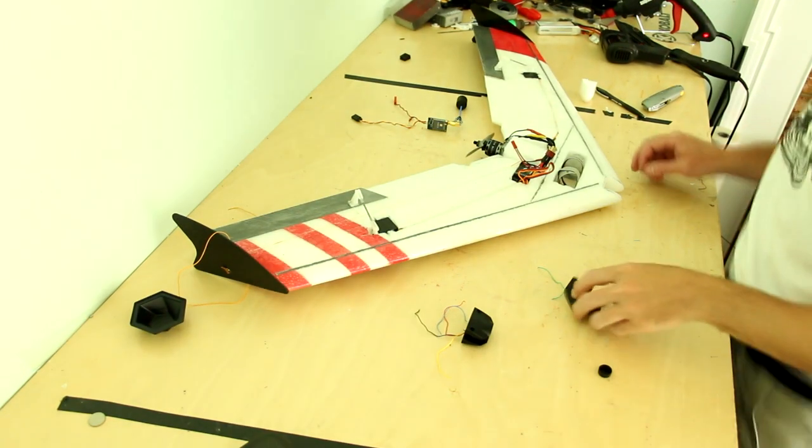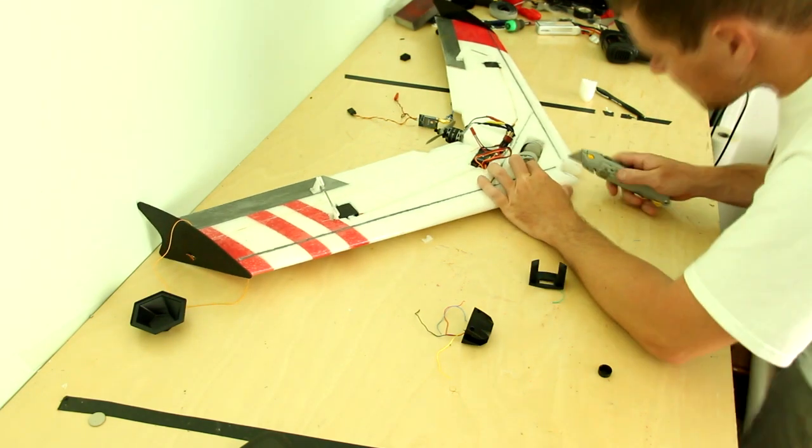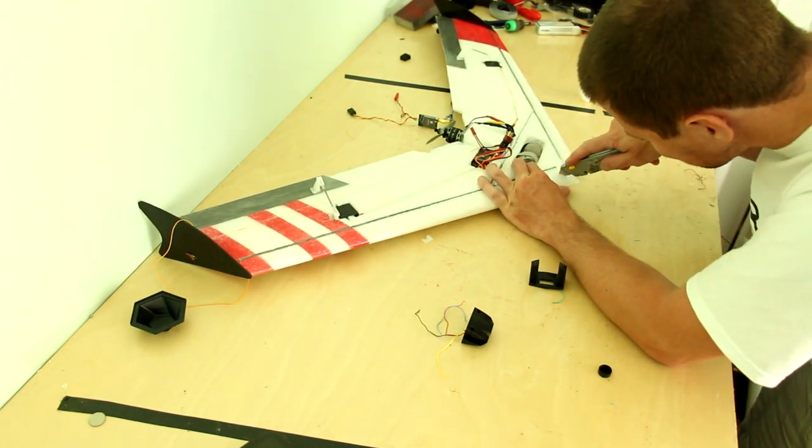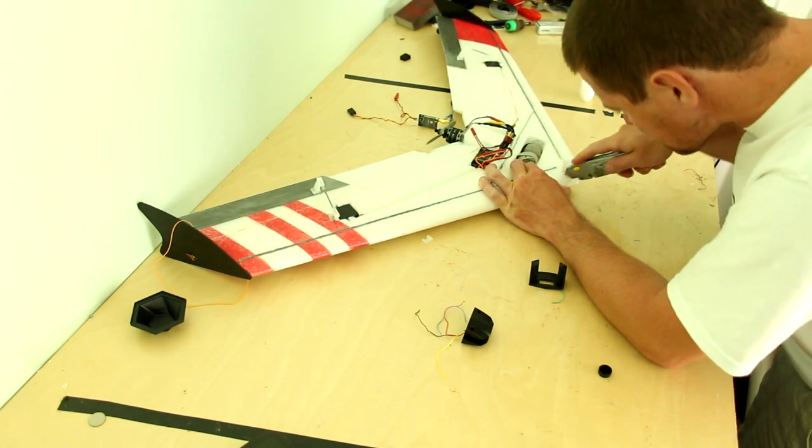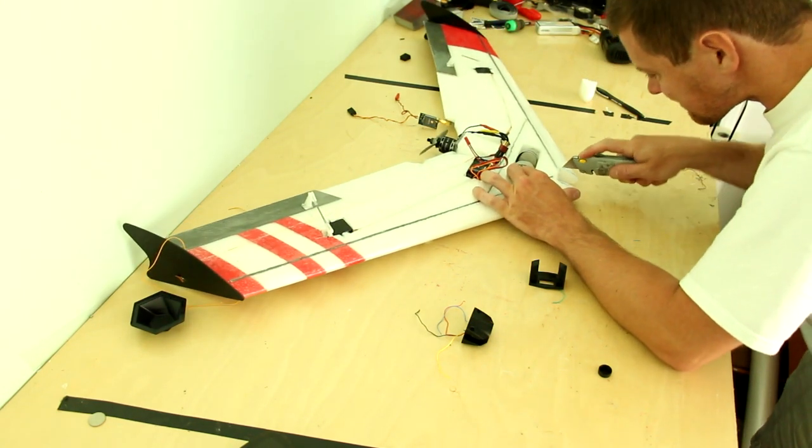The camera is the last component to be installed. Some people make a nice mount out of TPU or PLA 3D printed plastic that fits nicely into the nose. Simply cut out that section of the nose and glue it into place and you're all ready to fly.